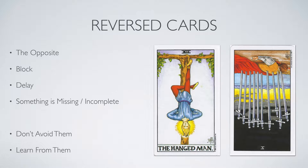If you know the meanings and the story of the upright card, it is really not difficult to interpret the reverse. There are four points I've outlined here. The first is the opposite — you interpret the reverse card as the complete opposite in meaning from the upright. For example, if the Ten of Swords upright talks about a whole lot of pain with swords stuck in this guy's back, the opposite would be that he's not in pain — you can imagine the swords falling out of him, releasing him from that pain.